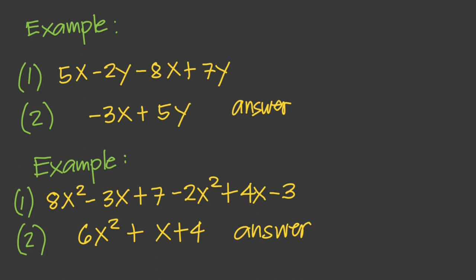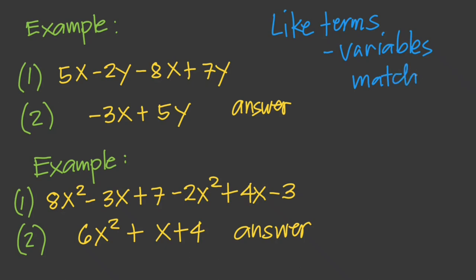In algebra, it is more common that we don't know the value of the variables. In this case, we simplify what we can and leave the variables in our final solution. One way to simplify expressions is to combine like terms. Like terms are terms whose variables match exactly, including their exponents. For example, 3xy and negative 7xy are like terms because they share the same variables xy.